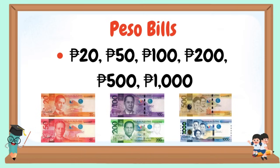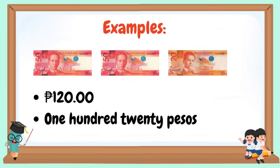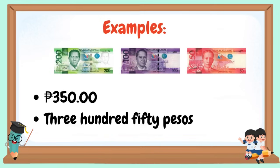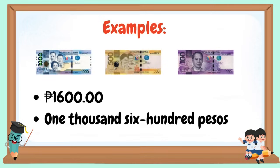Peso bills: We have 20 pesos, 50 pesos, 100 pesos, 200 pesos, 500 pesos, and 1,000 pesos. Examples: This is 120 pesos. This is 350 pesos. And this is 1,600 pesos.